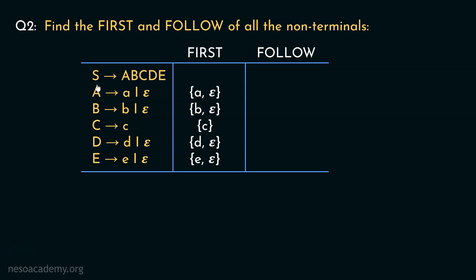Coming to S, S can be rewritten as uppercase A followed by uppercase B, uppercase C, uppercase D and uppercase E. Clearly, A is the first non-terminal on the right-hand side. Since first of A includes a and Epsilon, the first of S will include a. Now, A being Epsilon, if we substitute A using Epsilon, we need to obtain the first of B. First of B includes b and Epsilon, so we will have b in the first of S. If we substitute Epsilon in place of uppercase B, we will require the first of C. In case both A and B are substituted using Epsilon, the first of S can be obtained from first of C, which is lowercase c. So the first of S is complete.